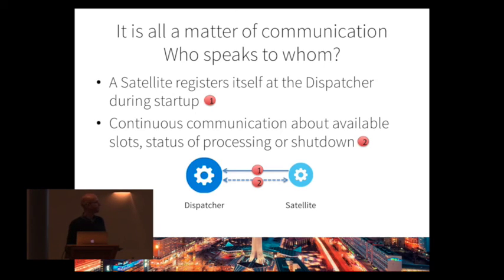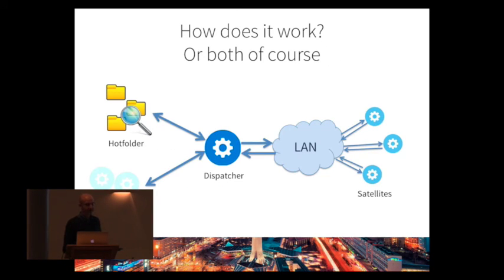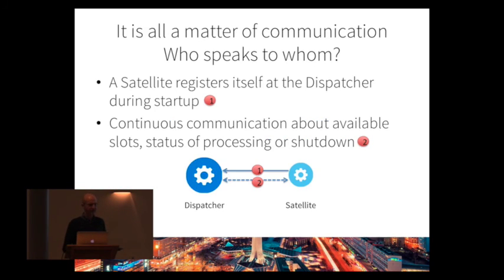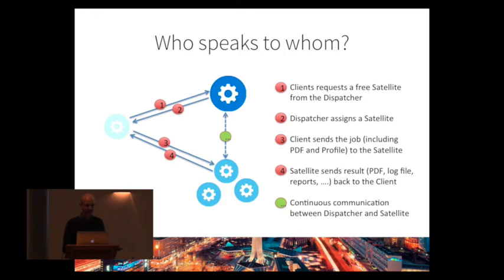A satellite registers itself at the dispatcher on startup, saying it's ready to work. After that, continuous communication is maintained between dispatcher and satellite — heartbeat messages confirming presence and reporting how many jobs are running. When a job finishes, the satellite reports it. All this communication happens continuously.